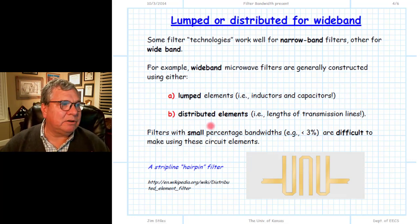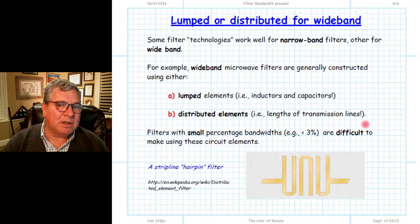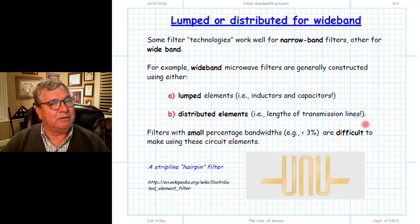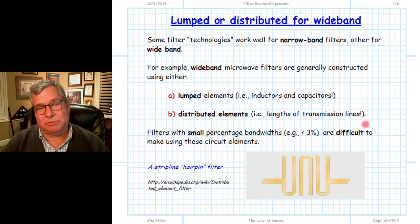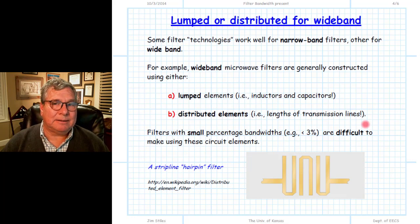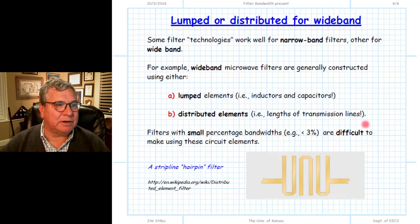Instead, it turns out we can use distributed elements — simply lengths of lossless transmission lines, typically terminated in either a short or open circuit so that the input impedance is purely reactive. We can use these to replace inductors and capacitors, which are purely reactive elements. A length of transmission line terminated in a short or open circuit can give us an impedance that is either positively reactive (inductive) or negatively reactive (capacitive), allowing us to build filter structures using these transmission line segments.